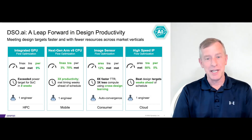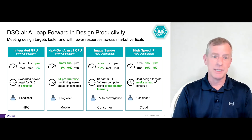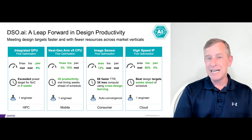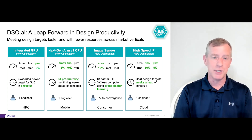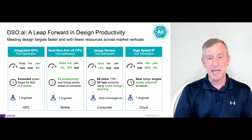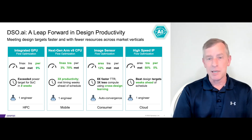Certainly. The most common application is flow optimization. This is where designers spend a lot of time tuning flow steps and tool settings in order to meet their design's power, performance, and area goals. And with an AI system like DSO, designers can be very effective in identifying the optimal flow solution and also applying this to scale very quickly across other projects and other design teams, something we call cross-design learning.